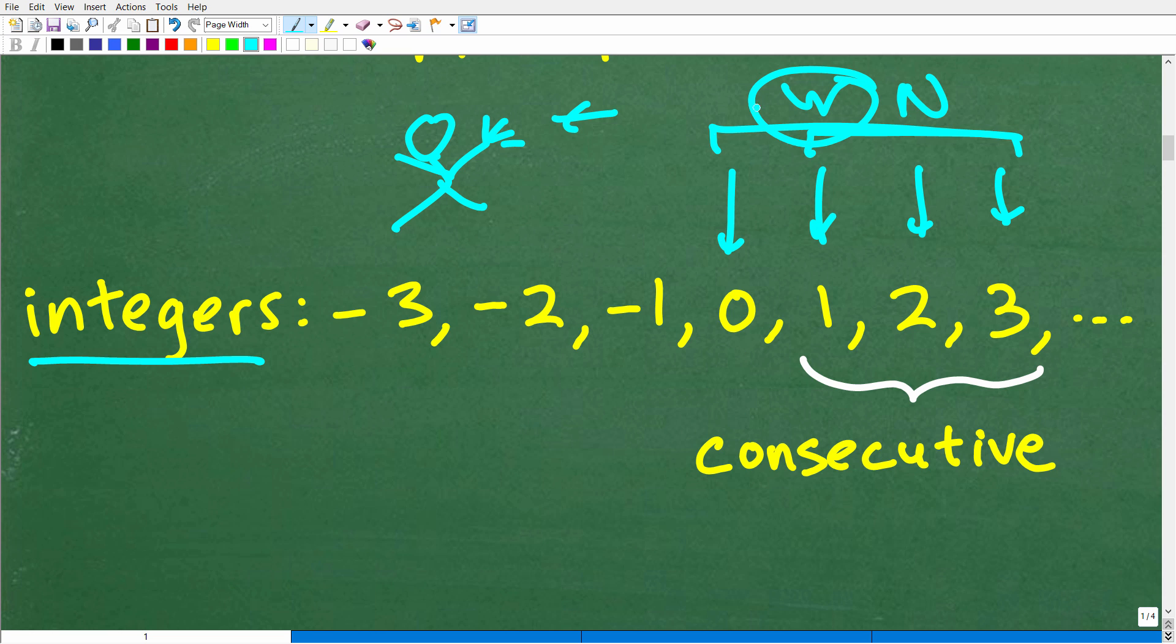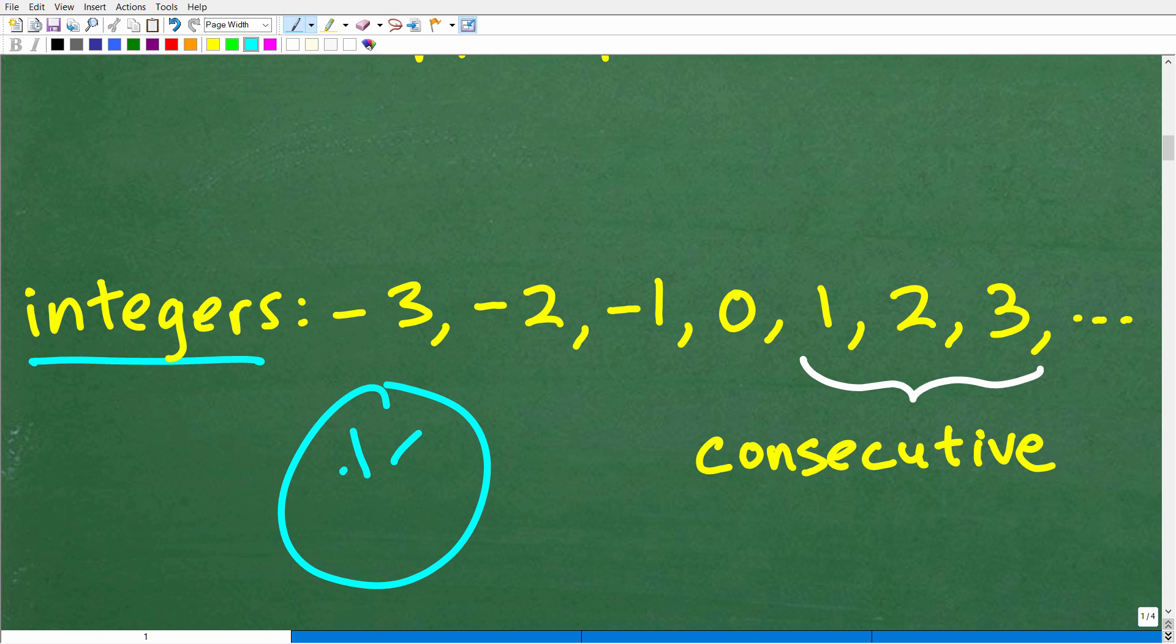And now, if you have the whole numbers and the negative of the whole numbers, this entire set right here is what we call the set of integers. And this is all part of the real number system. Now, somebody might be saying, I don't need a whole math class, Mr. YouTube math man, on integers. Just show me what they are.